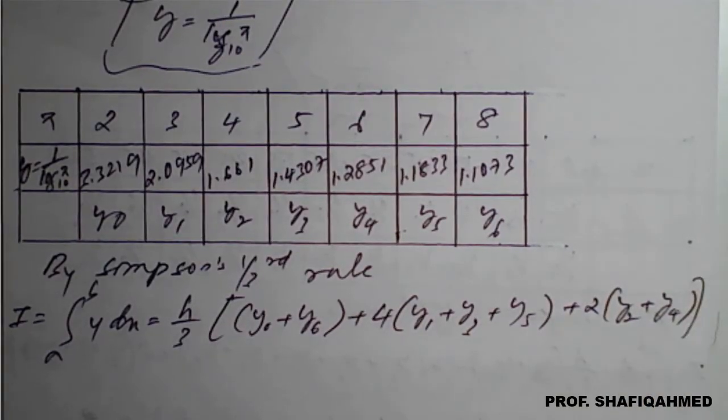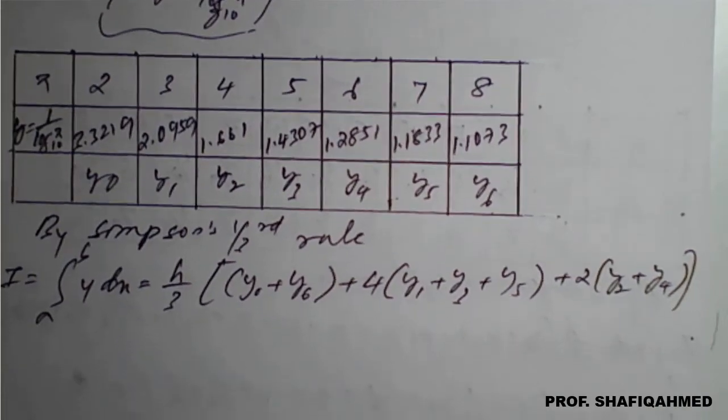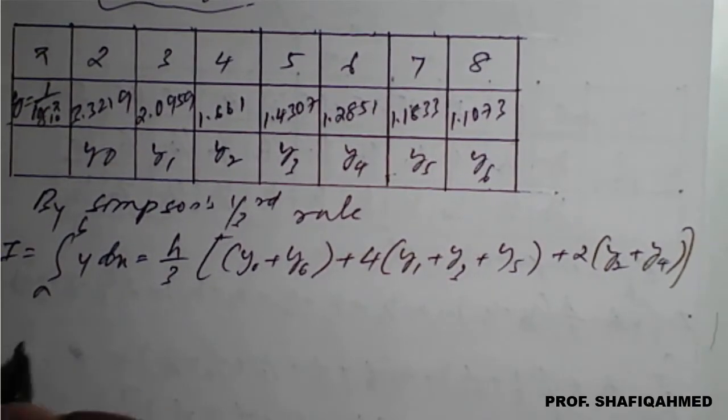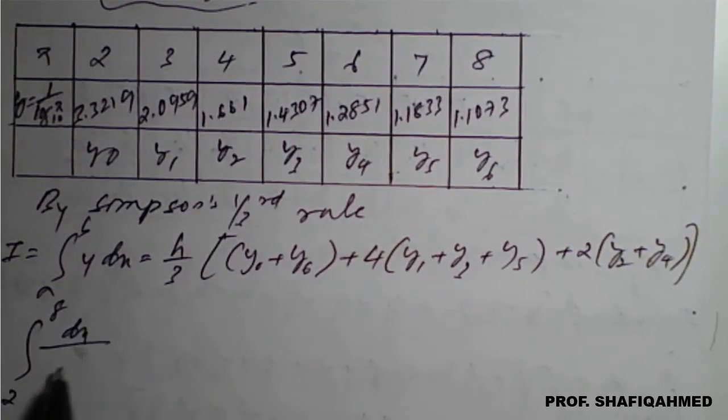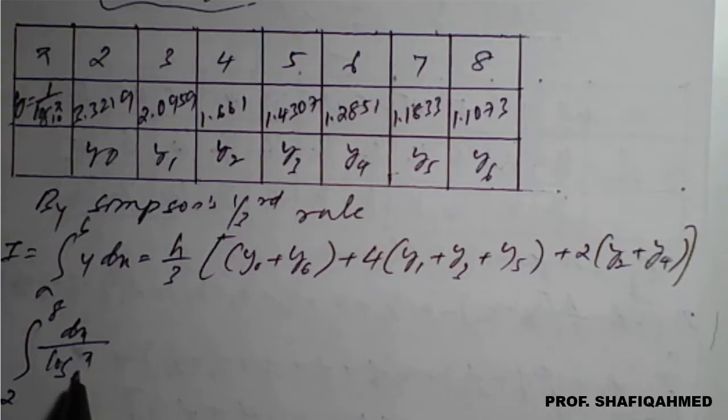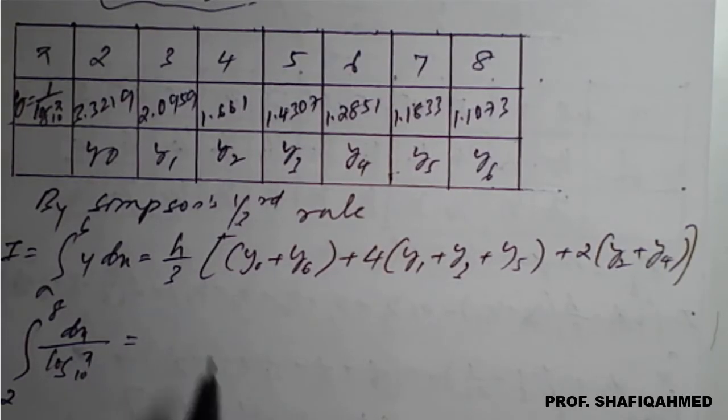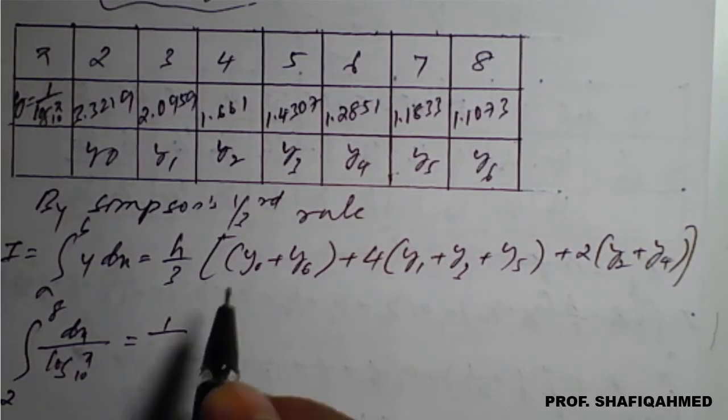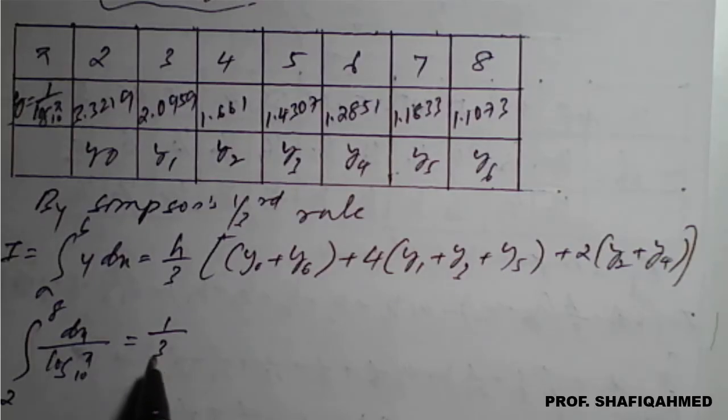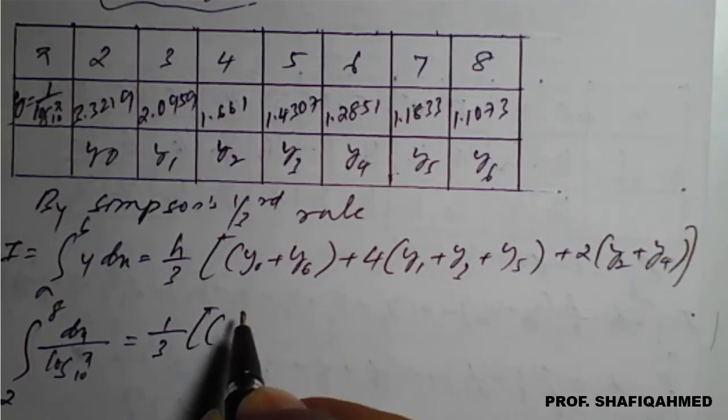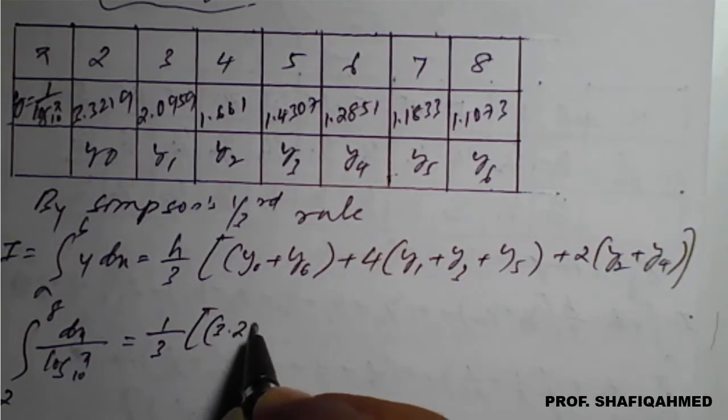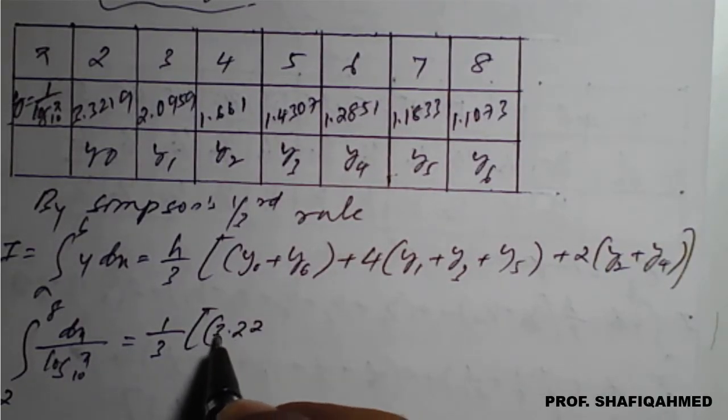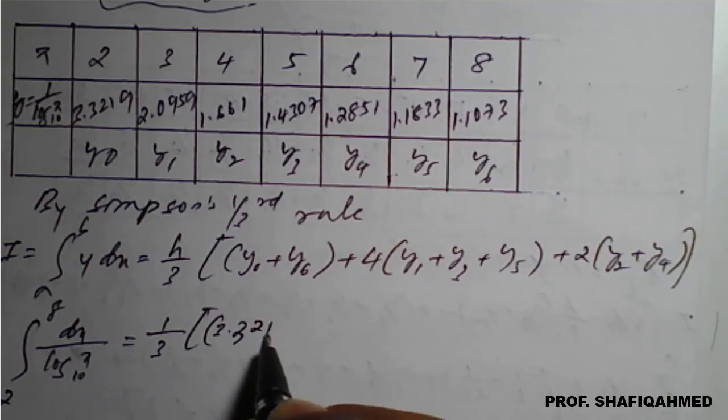Once we write this formula, we have to enter the values. The integration from 2 to 8 of dx divided by log of x to the base 10 equals h value is 1, which we calculated, so 1 upon 3 times bracket: